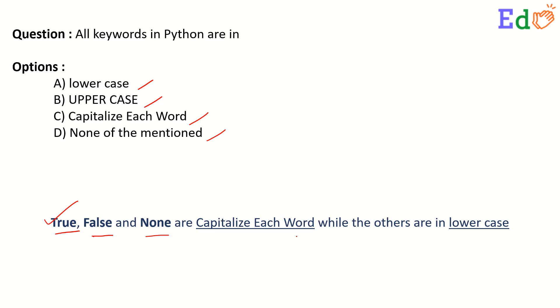So in this case, option D — that is, none of the mentioned — is the correct answer.